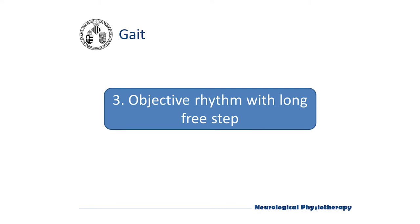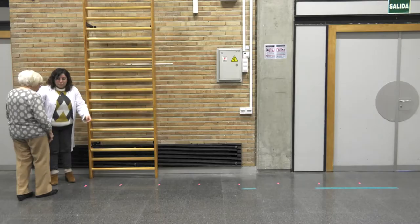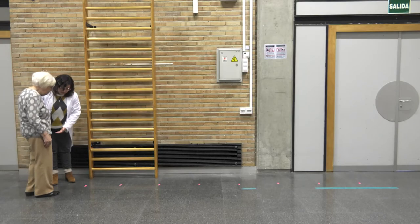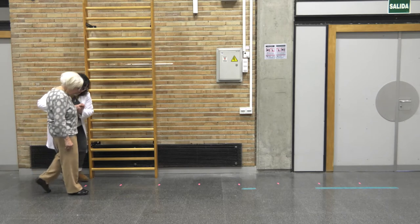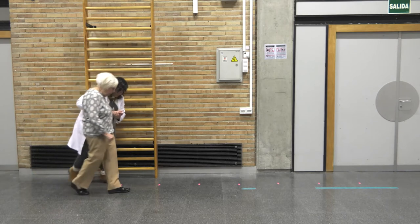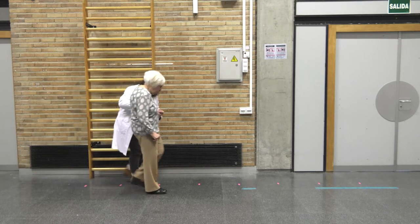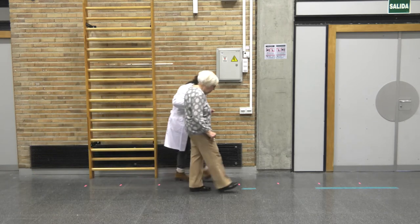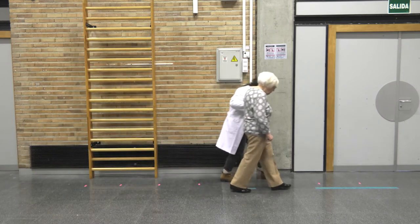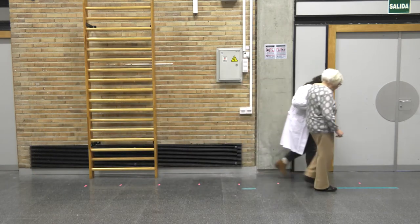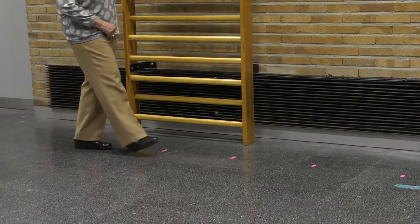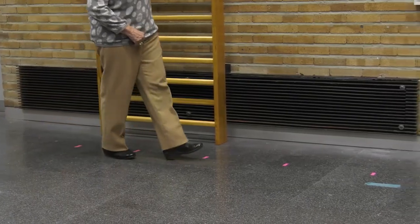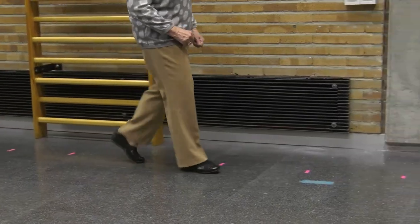Objective rhythm with long free step. Now we retrain the rhythm with an objective feedback. If necessary at first, we will come along with the patient by the arm. Don't include the step length right away — let the patient incorporate the rhythm of the free step.